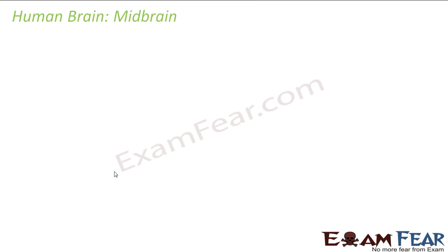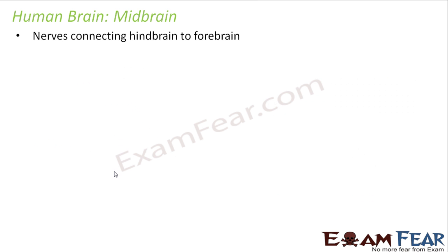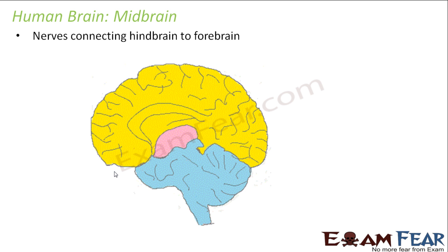Let us now look at the midbrain. Midbrain consists of nerves connecting the hindbrain to the forebrain. As visible in the picture, the midbrain acts as a mediator between the forebrain and the hindbrain.